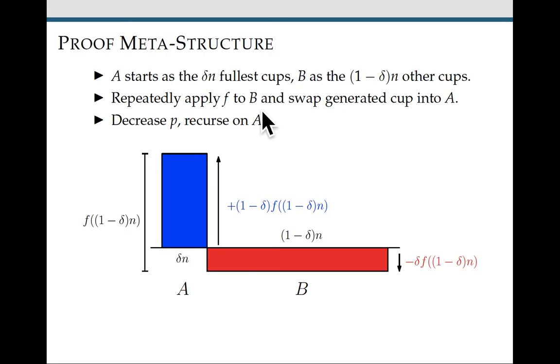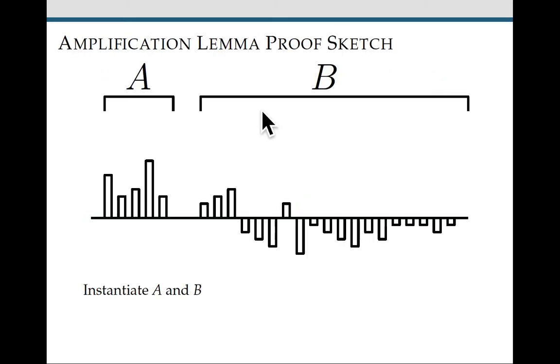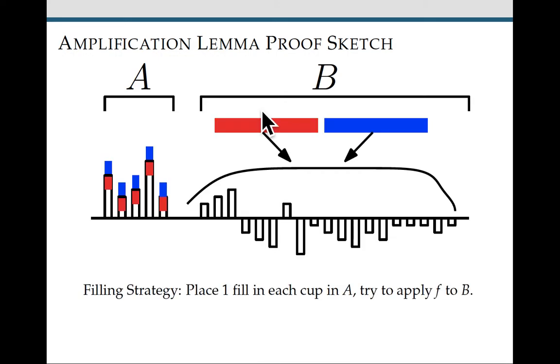This applying f to b part is a little bit complicated though, so let me take you through that in more detail. So we make our sets a and b. And our filling strategy is going to be to place one fill in every cup in a every time, and distribute the rest of our resources amongst b, according to the filling strategy f.